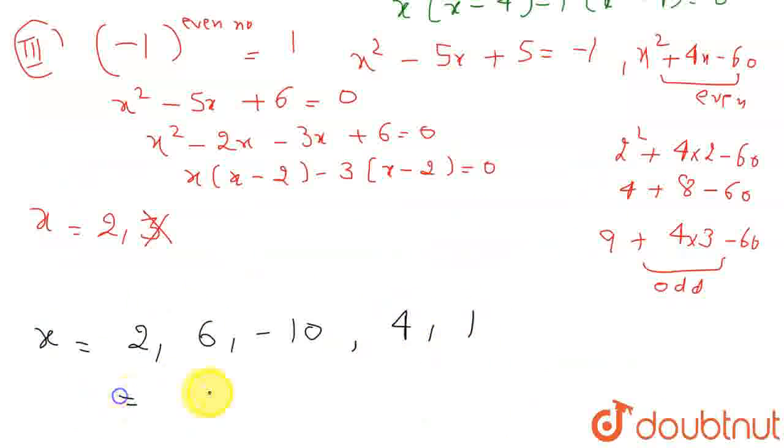So its sum will be 2 plus 6, 8, 12, 13, 13 minus 10 is equal to 3. So the required answer will be 3. Thank you.